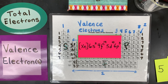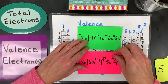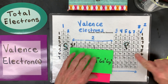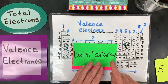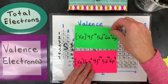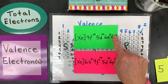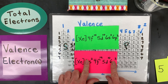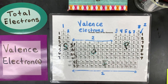Last one — definitely try it before I tell you. This configuration goes out to 6p3, so we're at the sixth level with three p electrons — 1, 2, 3 — which is bismuth. Valence? Five. Why? The 6s and the 6p are both at the sixth level: 6s2 plus 6p3 gives five total valence electrons.